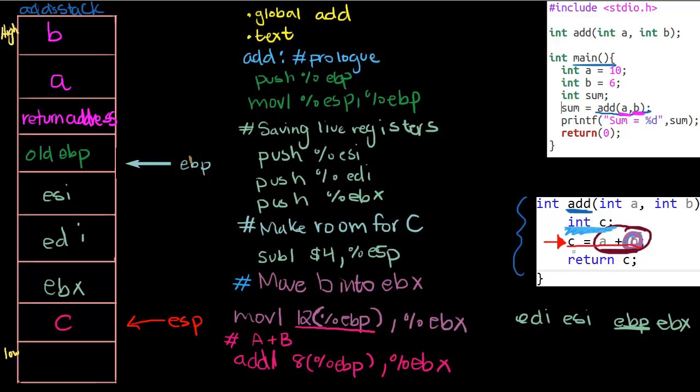We're going to continue translating our code. We basically did this part, A plus B. It's getting kind of messy, but we did A plus B. Now we want to set that equal to C. C is here in this spot where ESP is currently pointing to.